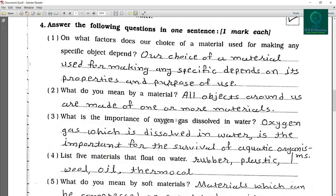What do you mean by a material? All objects around us are made of one or more materials. What is the importance of oxygen gas dissolved in water? Oxygen gas which is dissolved in water is important for survival of aquatic organisms.